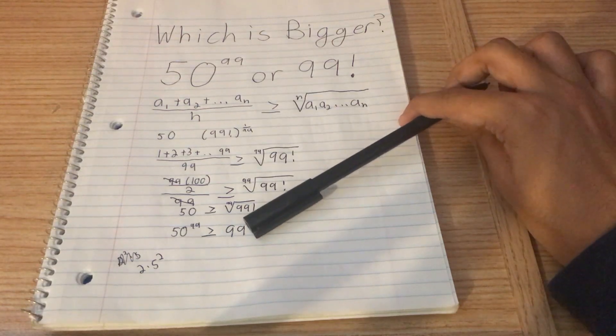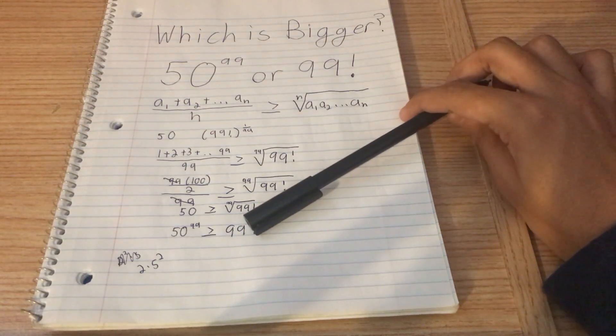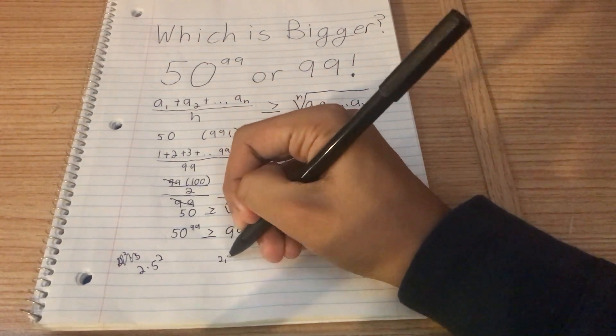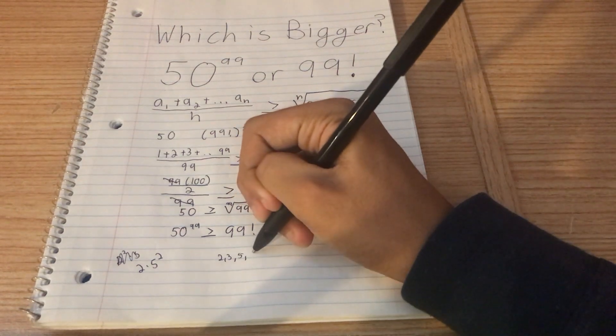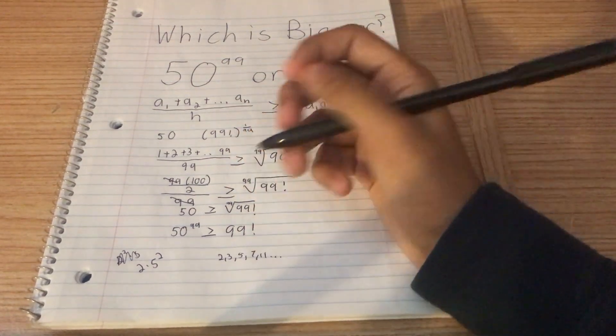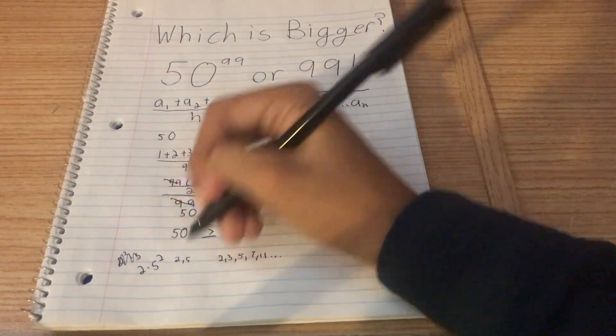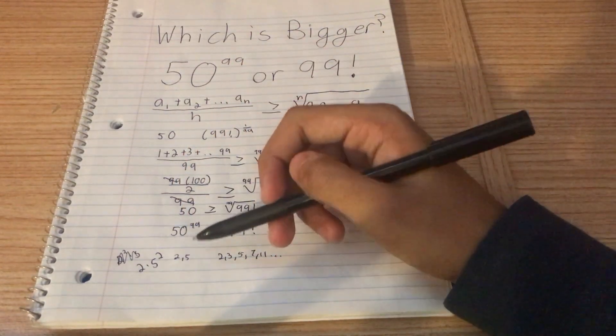At least one of every prime up to 99 will be on the right-hand side. So when you've got a bunch of primes on the right-hand side, 2, 3, 5, 7, 11, on and on and on, but you only have 2 and 5 on this side. And that means that these are never going to equal each other.